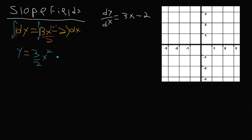And then the 2 — it's like 2 times x to the 0 power, so x to the first, which is just x. And then you need a plus C, because every good indefinite integral deserves a plus C.